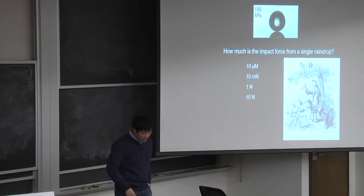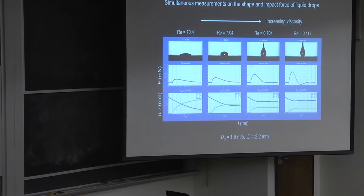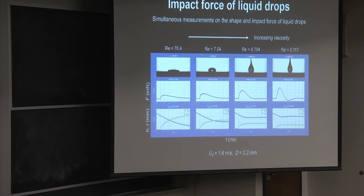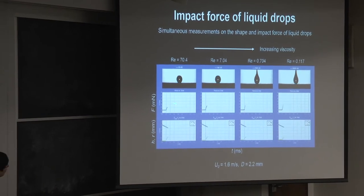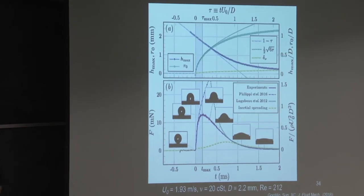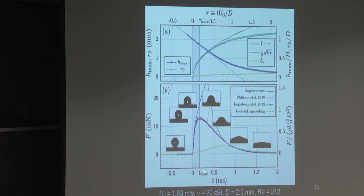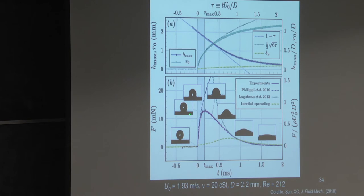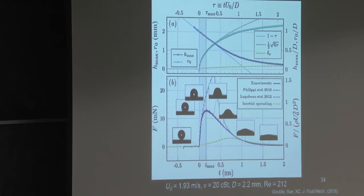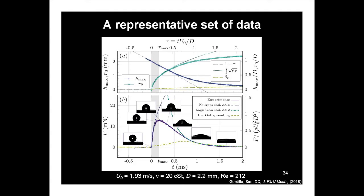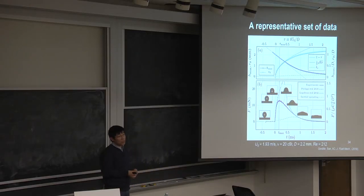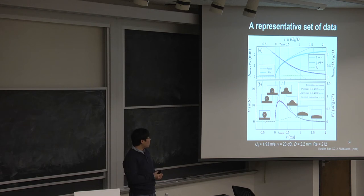We also increased viscosity of the drop from low to high and measured the impact force. This is highly relevant to industry — the repeated impact of rain drops on wind turbine blades causes significant damage to the coating layer. Companies like 3M are very interested in understanding how much impact force comes from a drop. But I won't go through those details now.